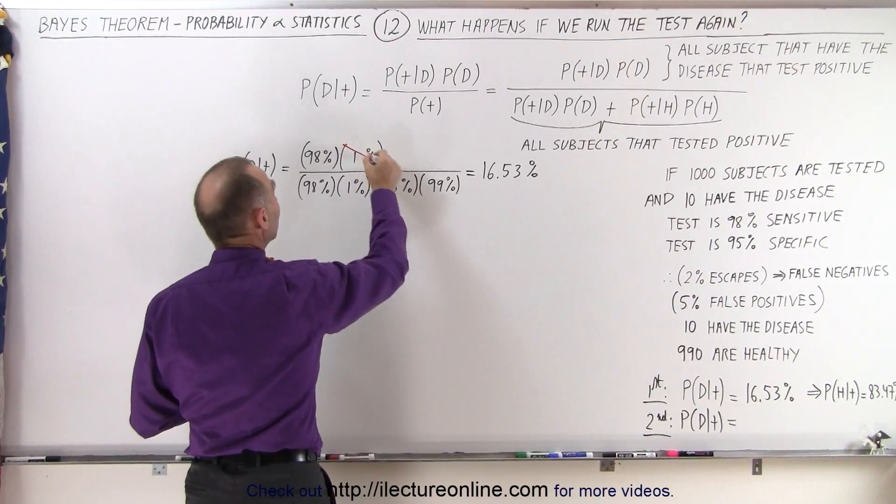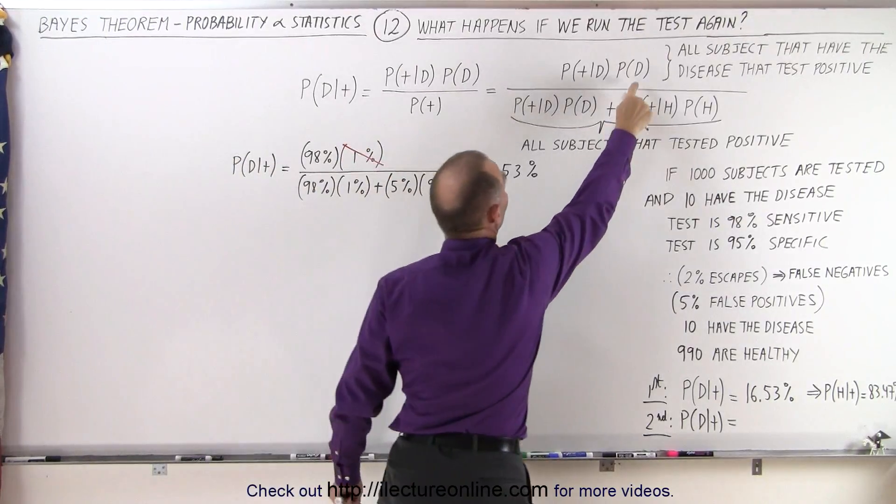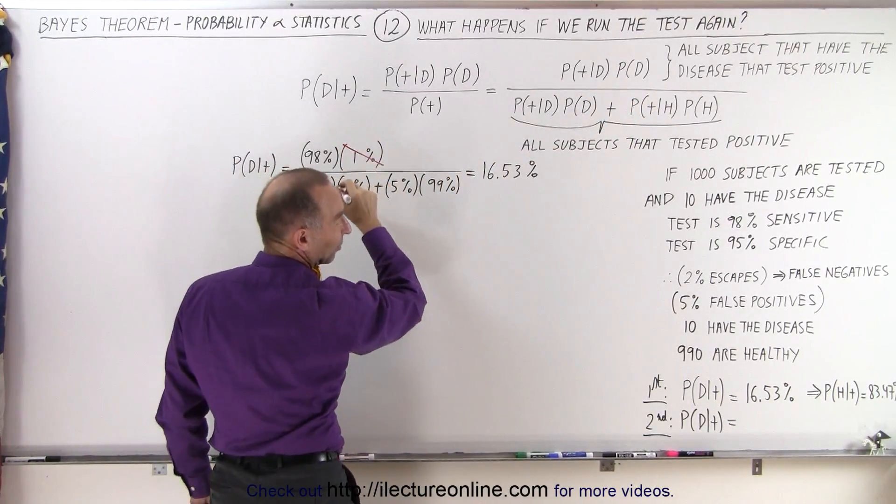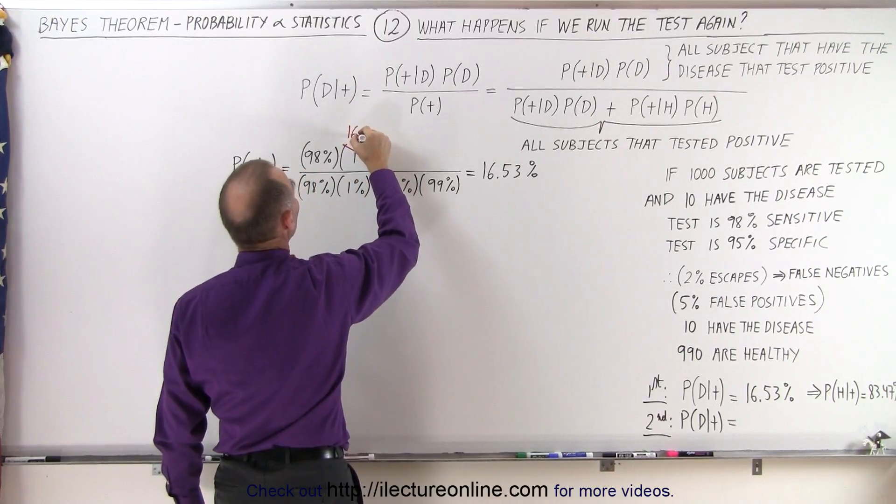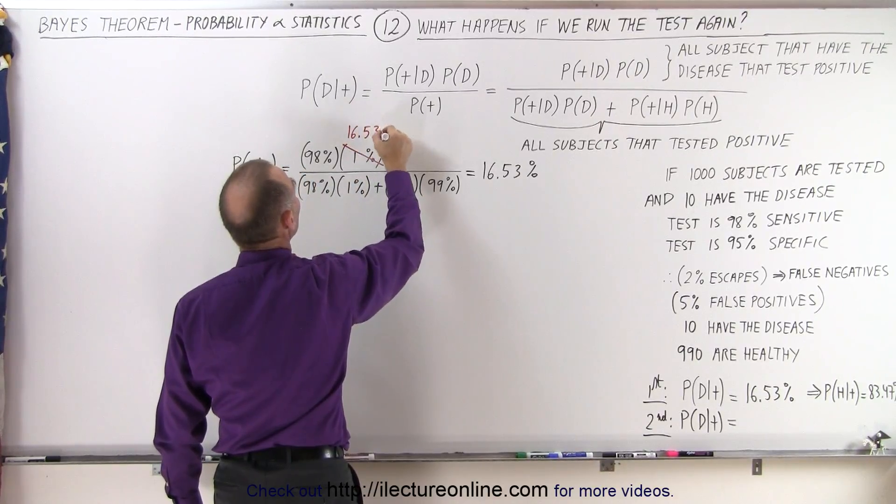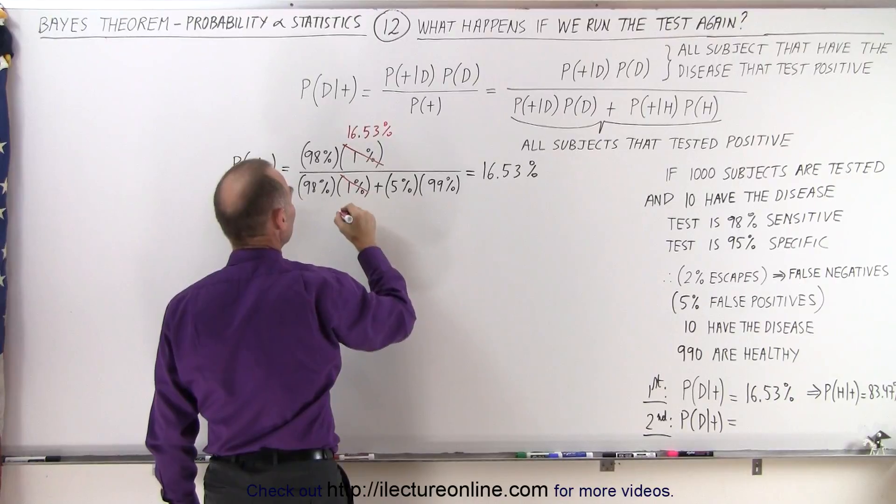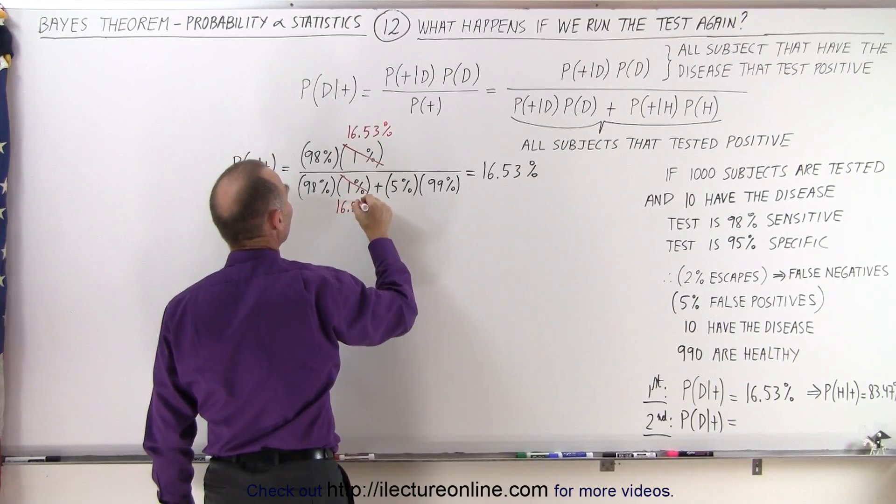So instead of having a 1% probability that they have the disease, there's now a 16.53% probability and the same for this 1% changes to 16.53%.